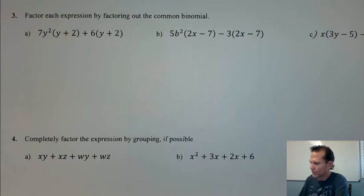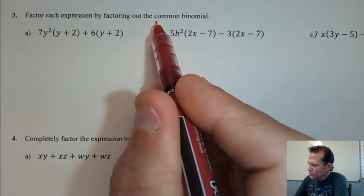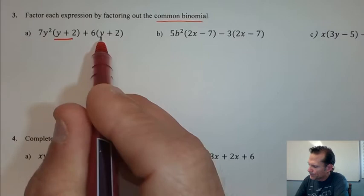Alright, moving on to the third part of 11.1. We're going to continue factoring out the greatest common factor, but it's a little bit different case here. We're going to factor out a common binomial.